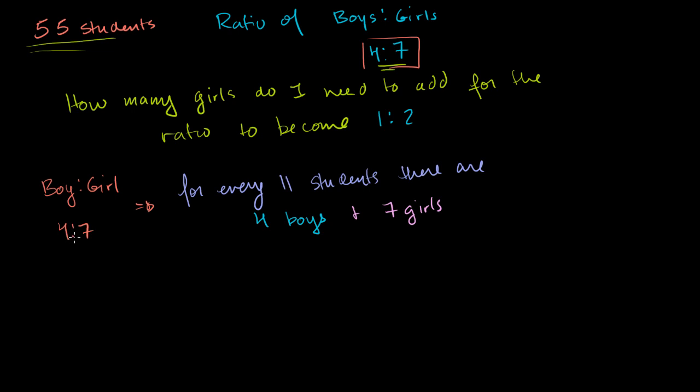You give me 11 students, well, you could split this classroom into a bunch of groups, and for every group of 11, you're going to have 4 boys and 7 girls. For every 11 students, 4 boys and 7 girls.